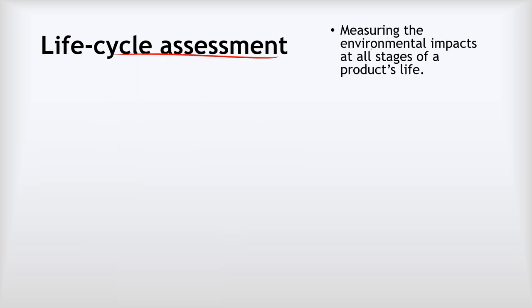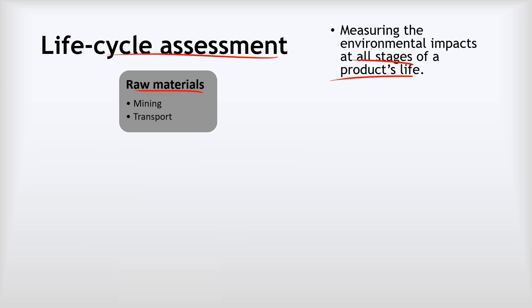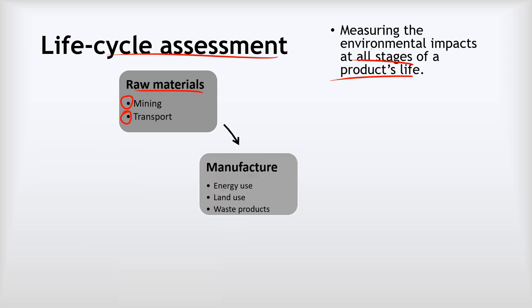The last topic is life cycle assessment (LCA). An LCA measures the environmental impacts at all stages of a product's life. We only tend to see environmental impacts when we're using a product, but it comes from somewhere and goes somewhere afterwards. Starting with raw materials: there are environmental impacts from mining or obtaining them, and from transporting them to factories. Next, the manufacturing stage involves environmental impacts from the energy used, the land used for factories, and waste products from manufacturing.